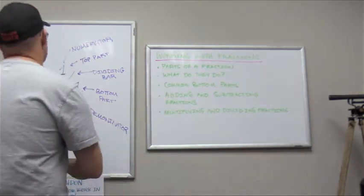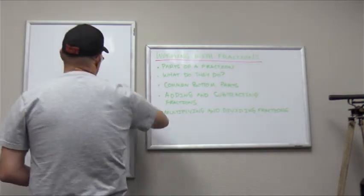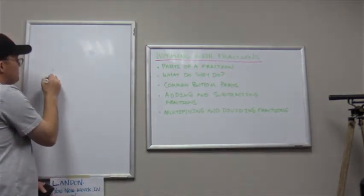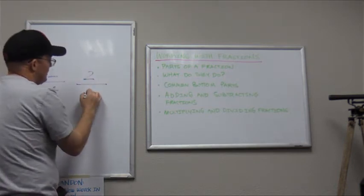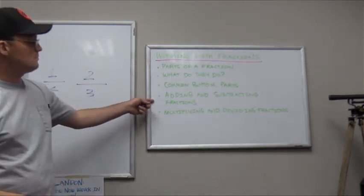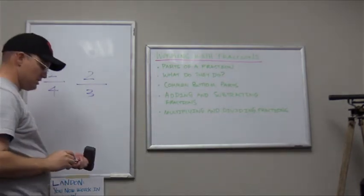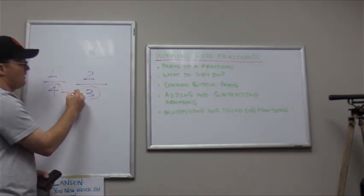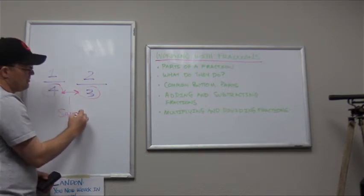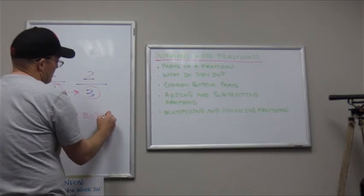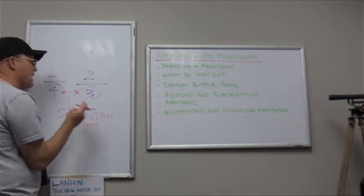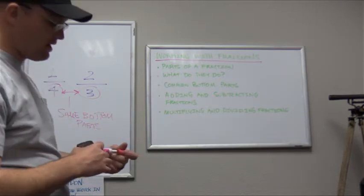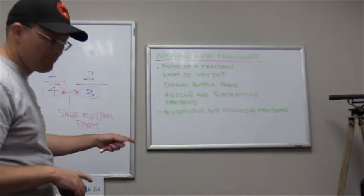Let's talk about common bottom parts — that's called common denominators, but I like 'bottom parts' because it just sounds funny. Common bottom parts means if you have two fractions like one-fourth and two-thirds, a lot of what we do with fractions — adding and subtraction — works better if the bottom parts are the same. They're common, same bottom parts. We don't need that as much for multiplication and division, but we need it for subtraction and addition. I'll also teach you guys how to simplify fractions.